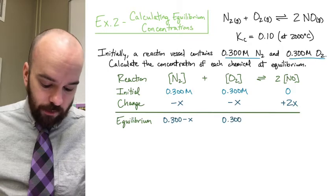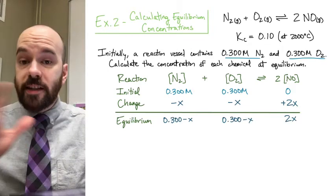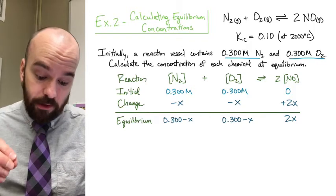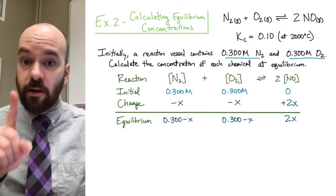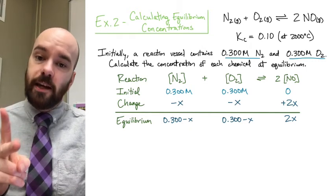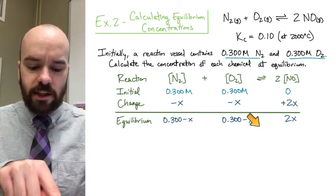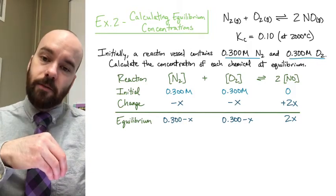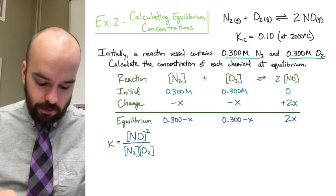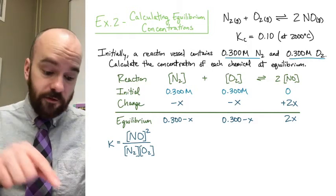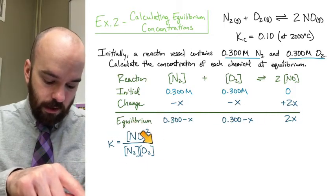The important thing is that everything on one side of the reaction has the same sign in the change row, and everything on the other side has the opposite sign. Our equilibrium concentrations are then expressed in terms of X: 0.3 minus X for nitrogen, 0.3 minus X for oxygen, and 0 plus 2X for nitrogen monoxide. That's all we can do with the ICE table for now, so we move to our K expression. The two tools in all these problems are the ICE table and the K expression — do as much as you can in one, then move to the other.